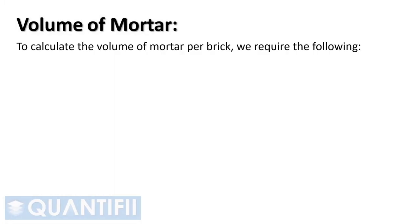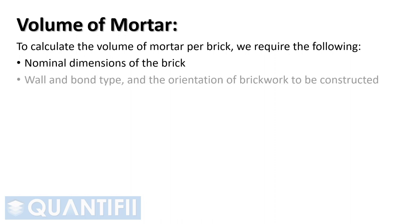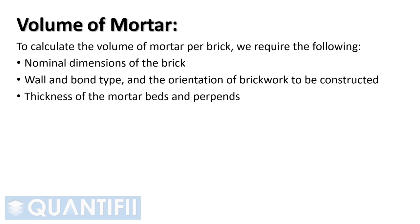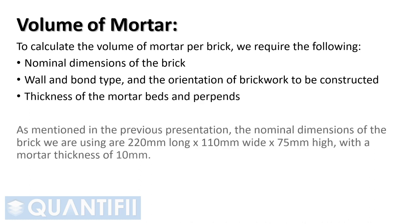To calculate the volume of mortar per brick, we require the following: nominal dimensions of the brick, wall and bond type, and the orientation of brickwork to be constructed, and the thickness of the mortar beds and perp ends. The nominal dimensions of the brick we are using are 220 mm long, by 110 mm wide, by 75 mm high, with a mortar thickness of 10 mm.